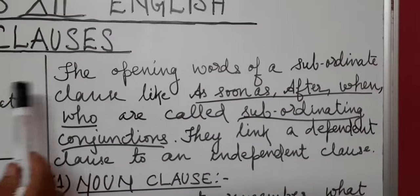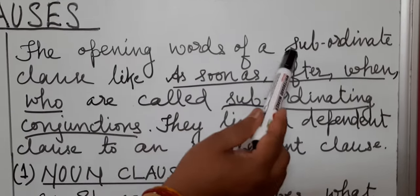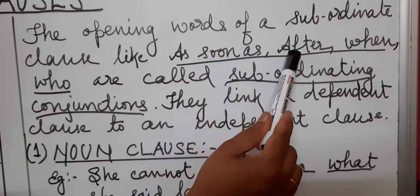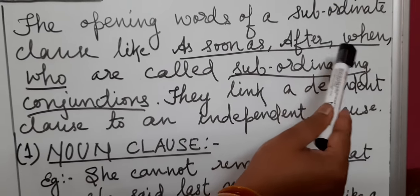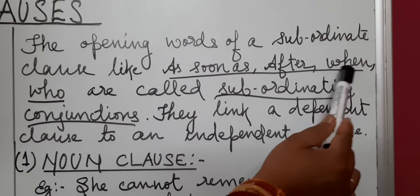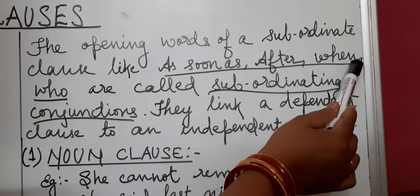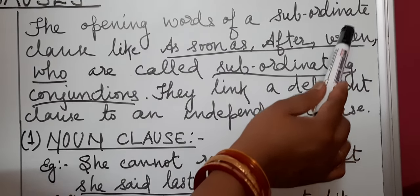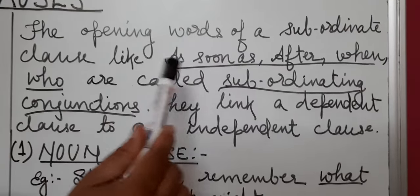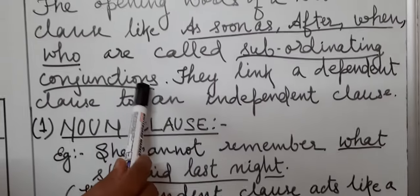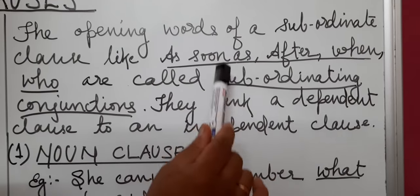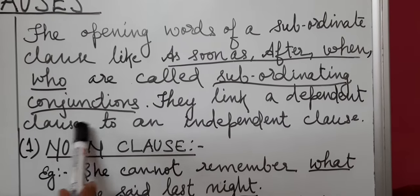Next we will see the opening words of a subordinate clause. As we saw — 'as soon as the bell rang,' 'after I die,' 'when the moon shone,' 'who is wearing a red sari' — words like when, who, what, though, after, as soon as are subordinating conjunctions. These are the opening words which start the subordinate clause. They link a dependent clause to an independent clause.